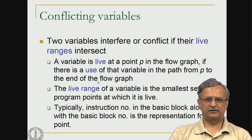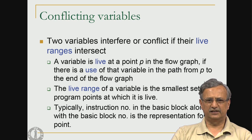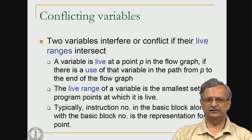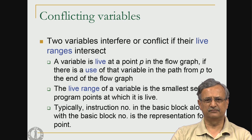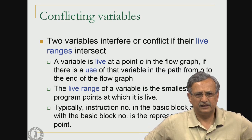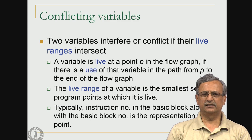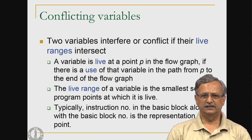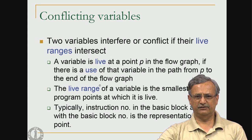Let us see what conflicting variables are. Two variables interfere or conflict if their live ranges intersect. A variable is live at a point p of the flow graph if there is a use of that variable in the path from p to the end of the flow graph.